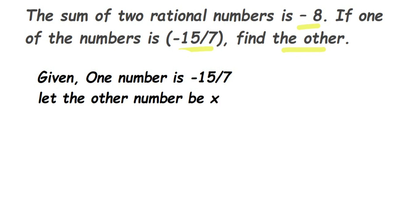Once we frame this, it's going to look like this: we're adding the two numbers, that is, the first number -15/7 added to the second number X, and the sum is equal to -8. So if we add these two numbers, it equals -8.